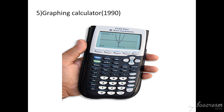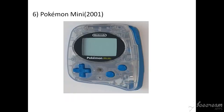The next mobile computer is the Pokémon Mini, introduced in 2001. It is a handheld game console designed and manufactured by Nintendo. It is the smallest game system with interchangeable cartridges ever produced by Nintendo, weighing just under two and a half pounds.